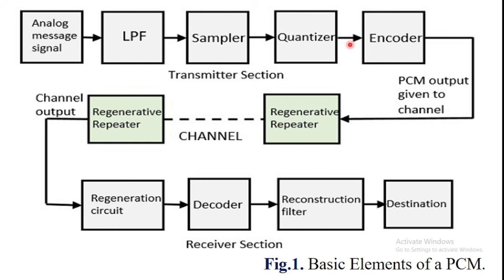The low-pass filter, sampler, quantizer, and encoder together act as an analog-to-digital converter in the transmitter section. The encoder also minimizes bandwidth use. That completes the transmitter section.